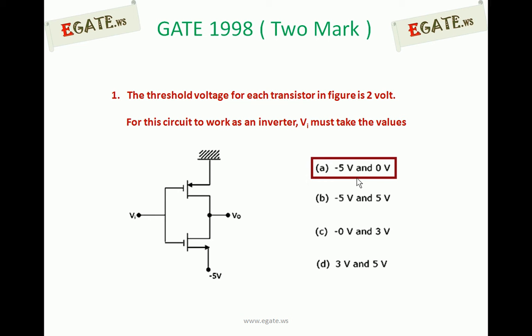In all options A, B, C, D, there are only four possibilities of input voltage given: minus 5 volts, 0 volts, plus 5 volts, and plus 3 volts. For these four possibilities, we apply VI as input and check which transistor is on and which is off. Since it acts as an inverter, for one input value one transistor is on and the other must be off. Simultaneously, only one transistor will be in the on condition — that is what we have to check.